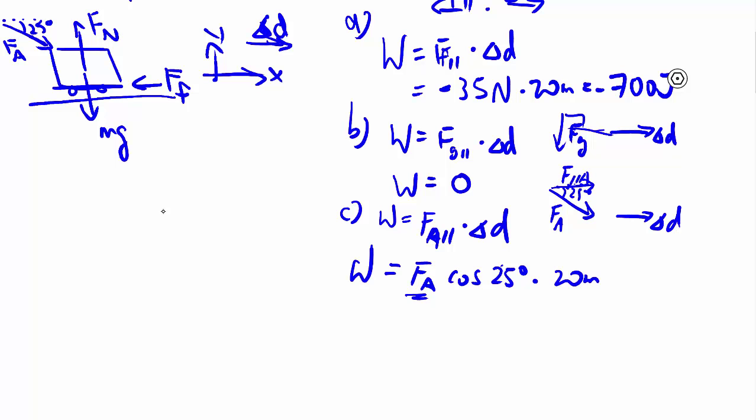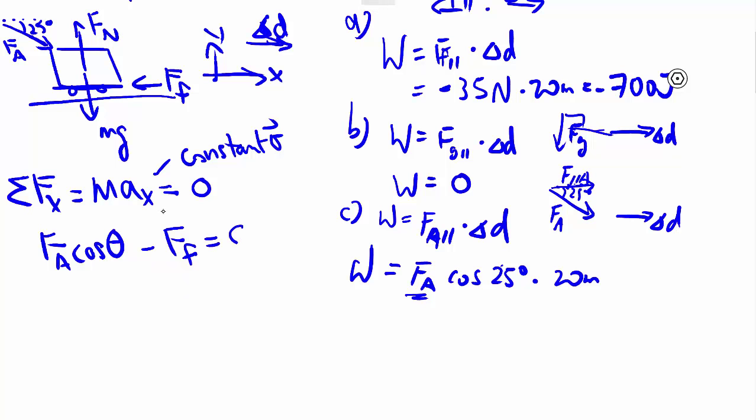We don't know what Fa is, so we have to come back to the free body diagram and figure that out. We look at the x direction. They tell us we're at constant velocity, so that's equal to zero. We have the horizontal component Fa cosine theta minus Ff equals zero. That's all we have - they give us Ff already, so we can solve for Fa directly. That's Ff divided by cosine theta, which is 35 newtons divided by cosine of 25 degrees.